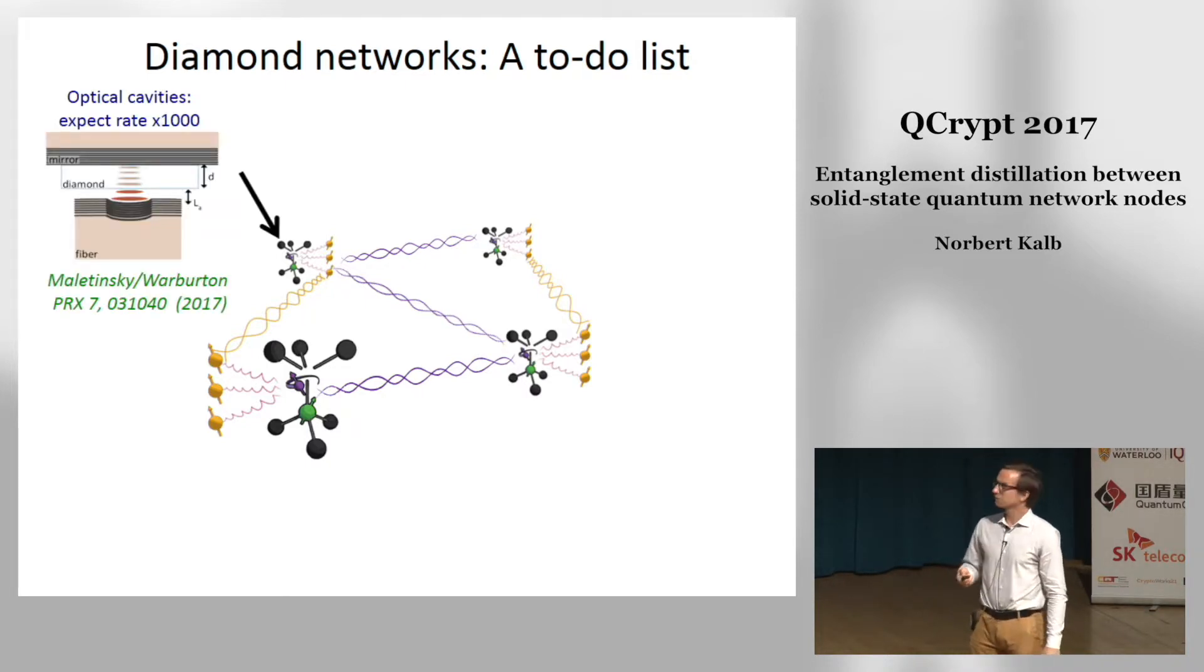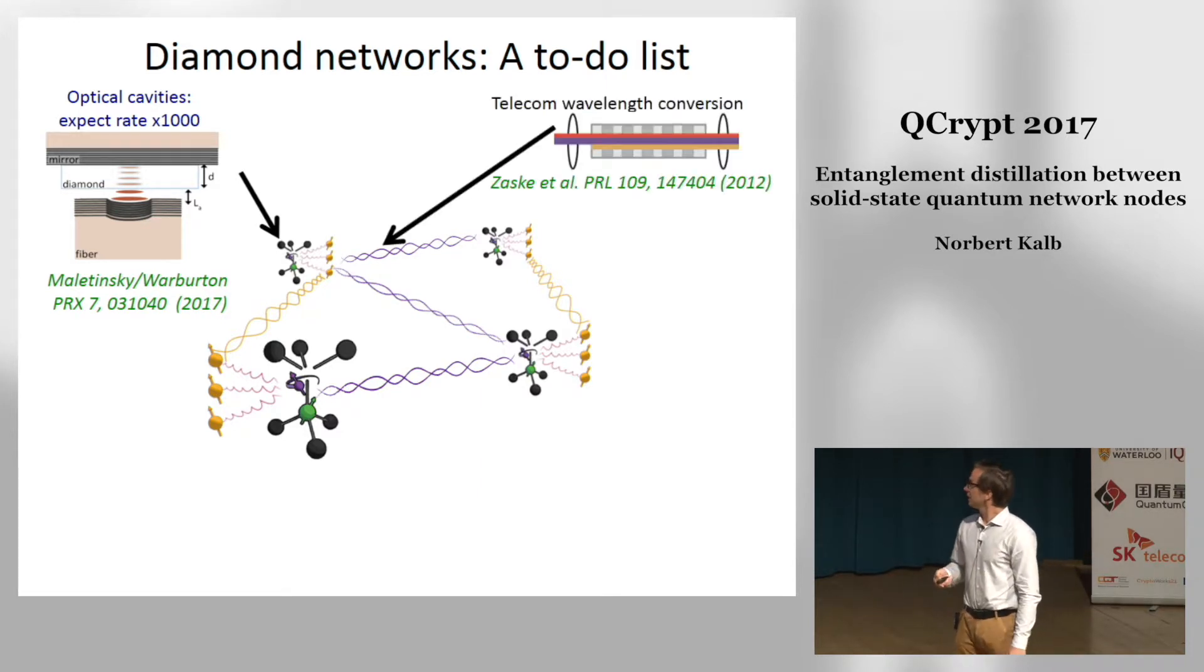In the future we want to encapsulate our NV centers in optical cavities. This will ideally give us an increase of our entangling rate by three orders of magnitude, and there have already been very promising results in the groups of Patrick Maletinsky and Richard Warburton at the University of Basel this year. Additionally, our network nodes will be separated by tens of kilometers and to avoid photon loss in optical fibers we will have to down-convert the emission of the NV center to the telecom band. Here also there have been very promising results in the group of Christoph Becher at the University of the Saarland.